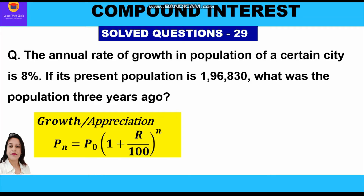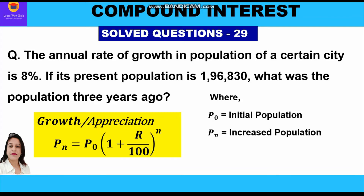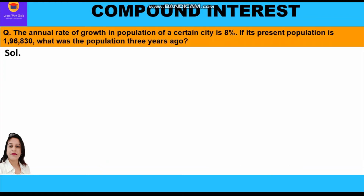The formula we will use for growth is: population after n years equals initial population in bracket (1 + r/100) whole raised to power n. Here, P₀ stands for initial population, Pₙ is the increased population after a certain period of time, r is the rate of growth per annum, and n is the number of years.